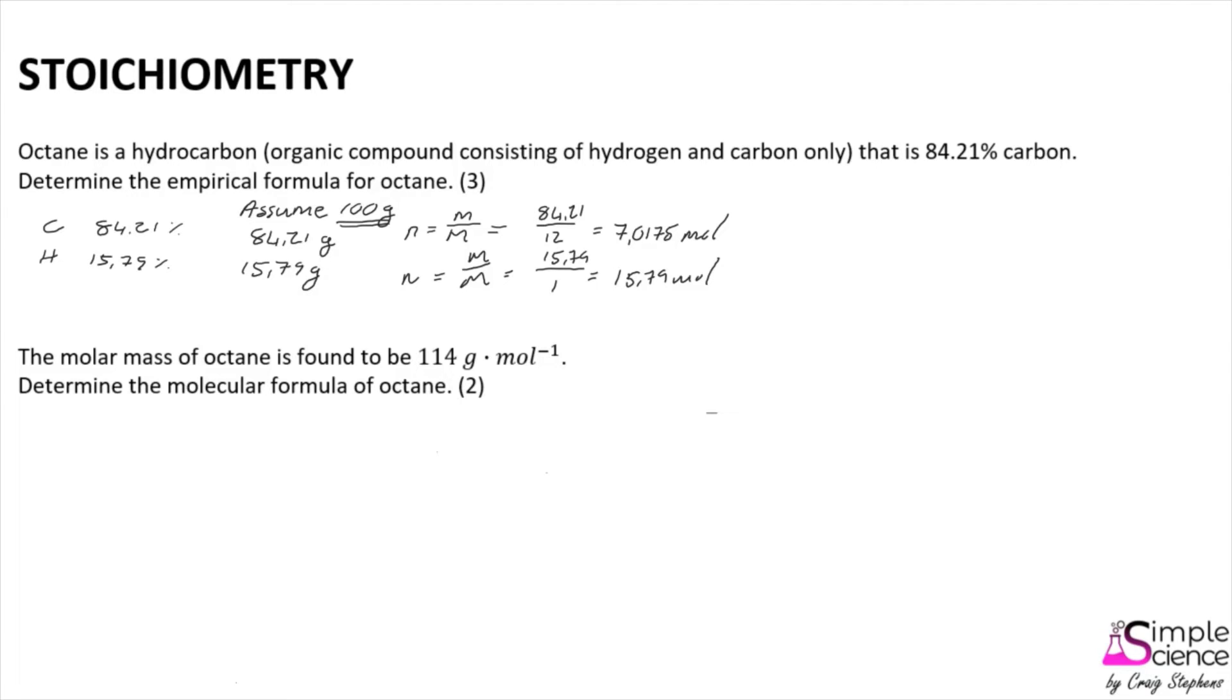What we can now do is compare or look at the ratio of carbon to hydrogen, where 7.0175 moles of carbon is in a ratio to 15.79 moles of hydrogen. We then divide both sides by the smallest number, which in this case is 7.0175. And that gives us a ratio of 1 to 2.25.